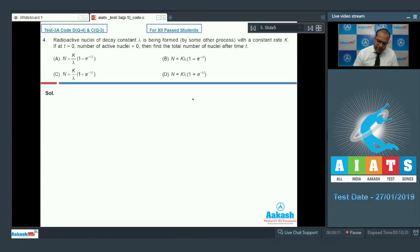So the rate of formation of radioactive nuclei at any time T can be written as dN by dT is equal to K minus λ into N, where N is the number of radioactive nuclei at any time T. This differential equation can be written in this way: dN by K minus λN is equal to dT.